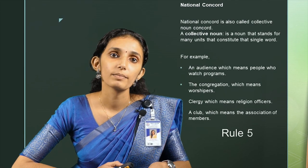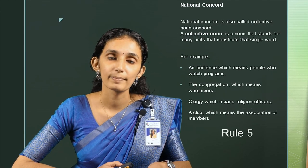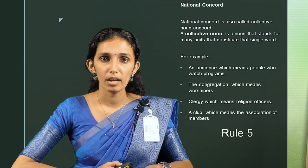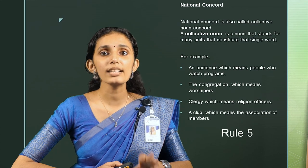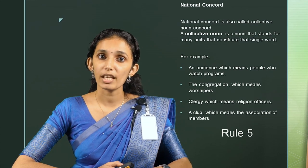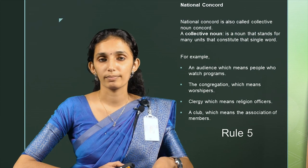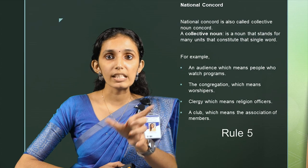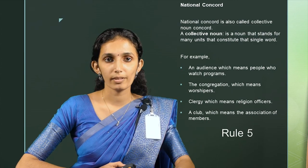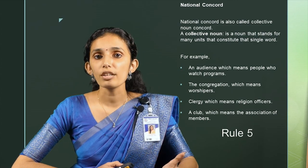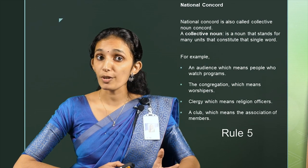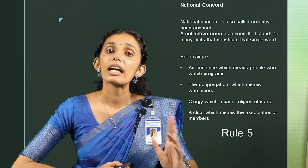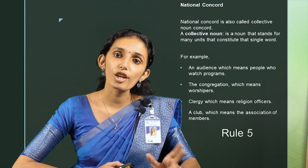Rule number 5: Notional concord, also called collective noun concord. A collective noun is a noun that stands for many units that constitute that single noun. Examples include: an audience (people who watch programs), the congregation (worshippers), clergy (religious officers), and a club (association of members).